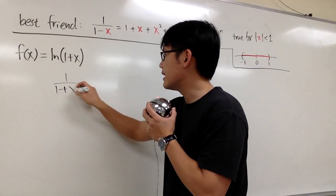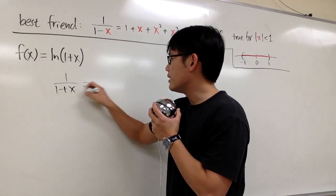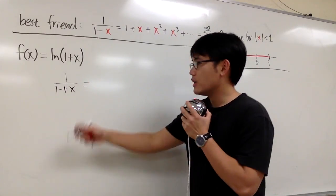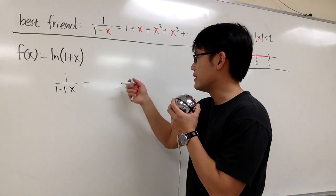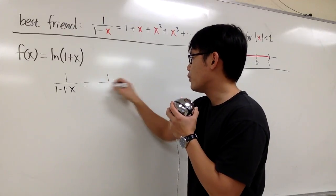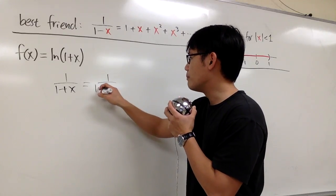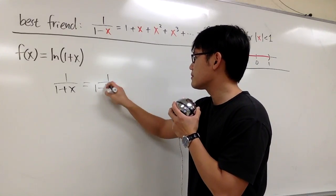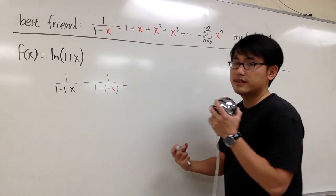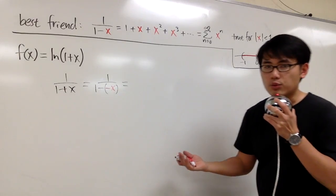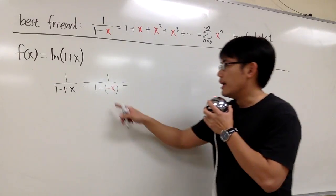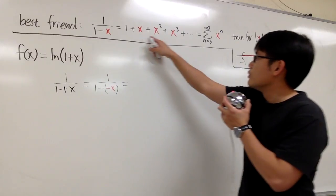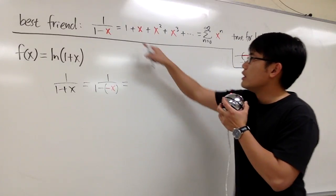For 1 over 1+x, to get a power series we look at the plus x as minus negative x, so we have 1 over 1 minus negative x. I'll also show you the expanded version by plugging negative x into all the x's.